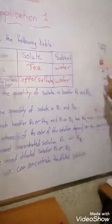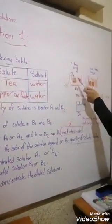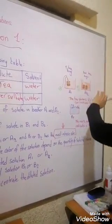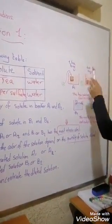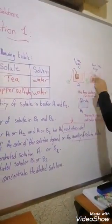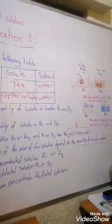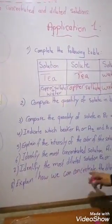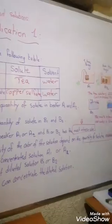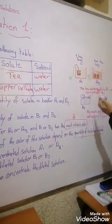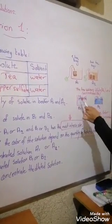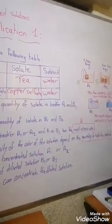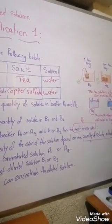The most concentrated solution is the one with the greater quantity of solute, so A2, which has two tea bags. The most diluted solution is the one with the least solute, which is B1 with only 2 grams of copper sulfate.